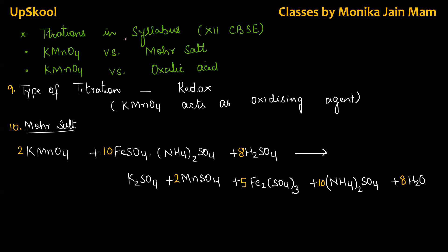In our plus two CBSE, titrations in syllabus, that is potassium permanganate versus mohr salt, titration number one. Second, potassium permanganate versus oxalic acid. Now what type of titration it is? It is redox, means oxidation and reduction is taking place and potassium permanganate is oxidizing agent. So it means mohr salt and oxalic acid will definitely be reducing agent.